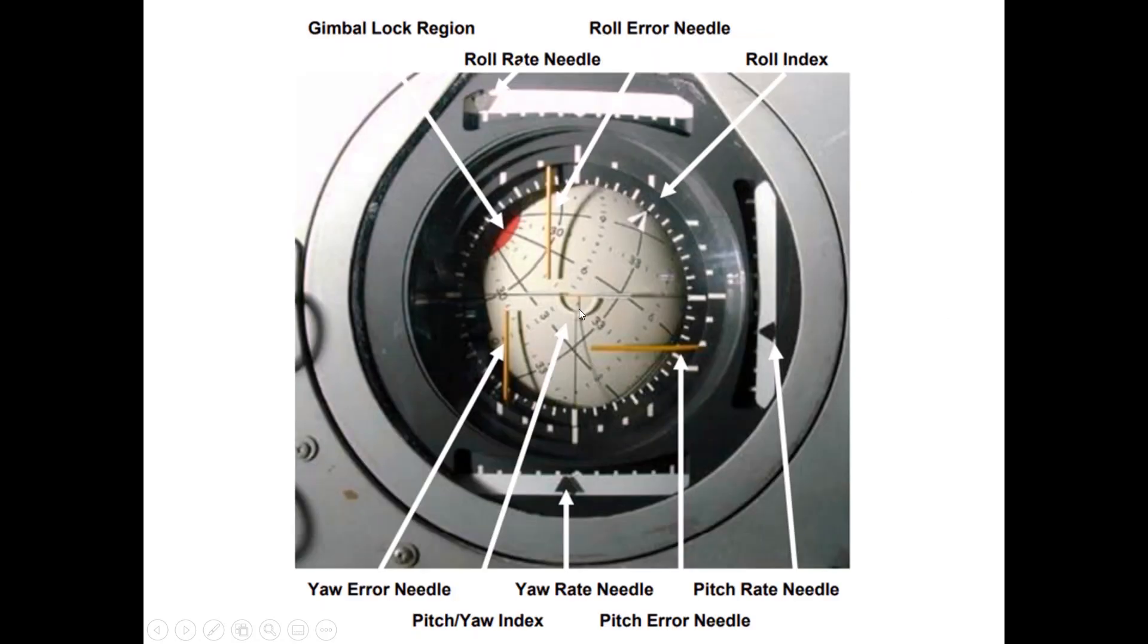With one glance, the astronaut can tell in an instant the orientation of his craft. Not only can he see if he is right side up, but he can tell the amount of pitch, roll, and yaw. You can even tell if you're getting into a dangerous situation like gimbal lock.